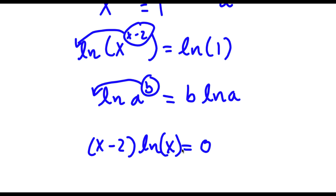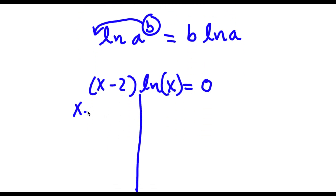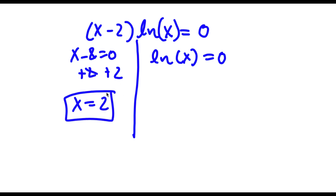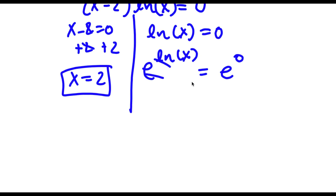This gives me two equations: x minus 2 equals 0, and ln x equals 0. For x minus 2 equals 0, adding 2 to both sides gives x equals 2 — the solution we already found. For ln x equals 0, I take e to the power of both sides: e to the power of ln x equals e to the power of 0. Since e and ln cancel, I get x equals 1, because anything to the power of 0 is 1. So my two solutions are x equals 2 and x equals 1.